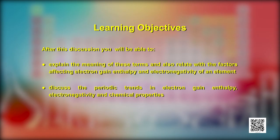Hello students. By now we know how atomic radius, ionic radius, and ionization enthalpy vary in a period and in a group. We will be discussing trends shown by a few more properties like electron gain enthalpy, electronegativity, and chemical reactivity.